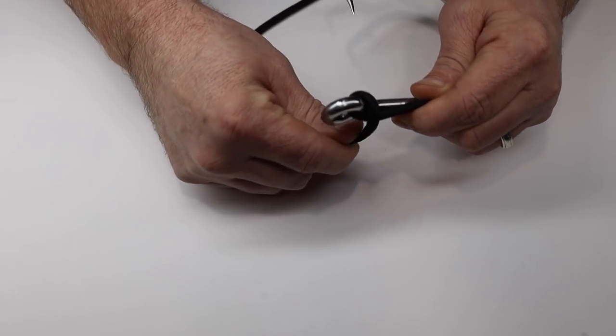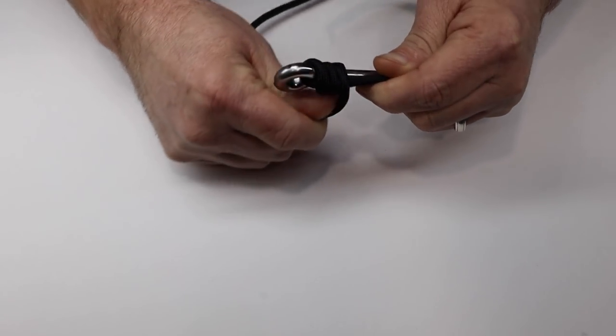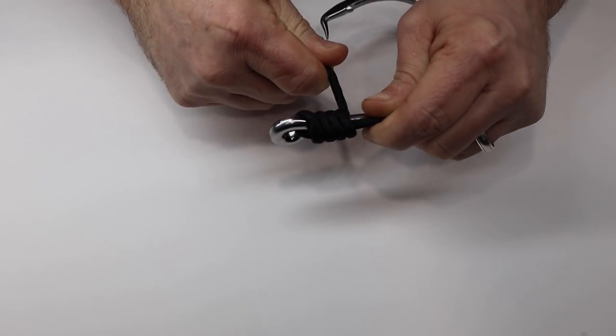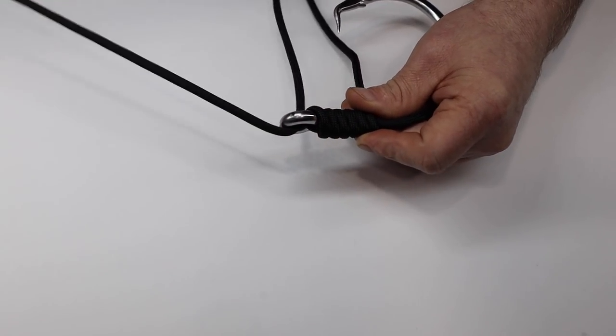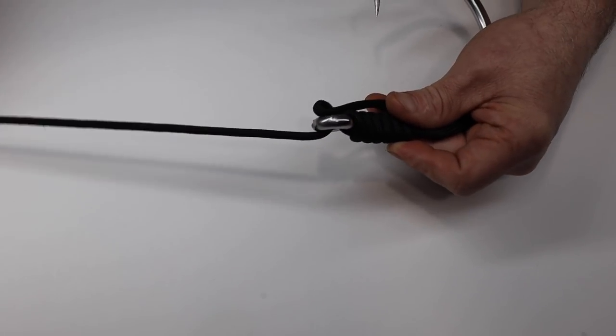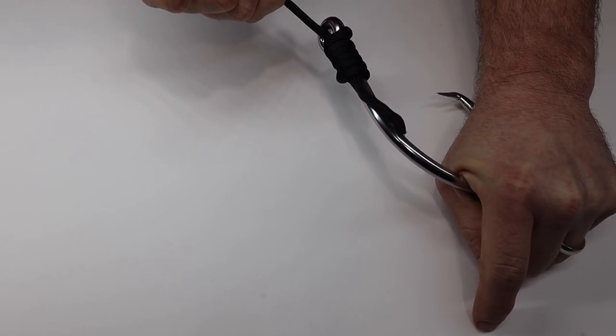You run it down the shank about an inch and a half. You start at the eye of the hook and you wrap down. I like to wrap it at least seven times. Once you get to the bottom, hold it all tight and run the other end of your leader back through the eye of your hook. Then you cinch it all up tight. Once you get it tight, it won't come back apart.